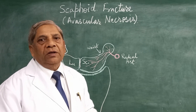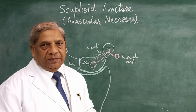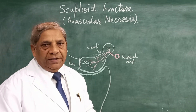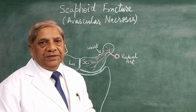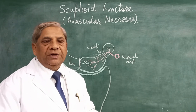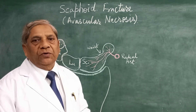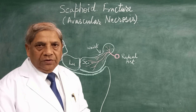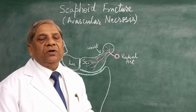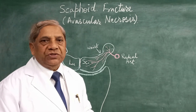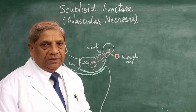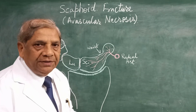Among all the eight carpal bones, four are arranged in the proximal row and the other four in the distal row. The scaphoid is the most commonly fractured carpal bone.